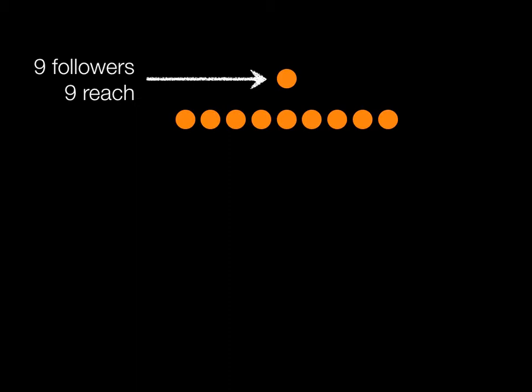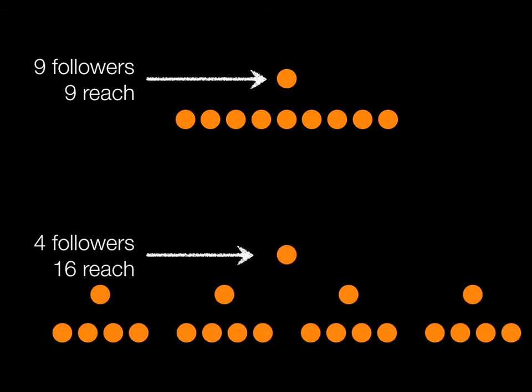At a simple level, if you look at a social network like Twitter, you have a person and they have followers. So when that person says something, their message has the potential of reaching a certain number of people. It's not quite that simple, of course, because someone with fewer followers may have greater reach if their followers are themselves popular. For example, we've got two people — one with nine followers and a reach of nine, the other with only four followers but a downstream reach of 16.